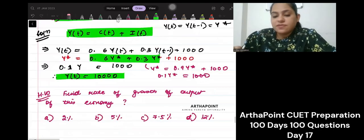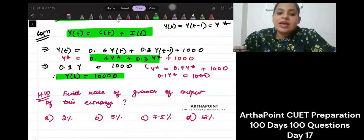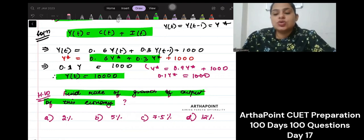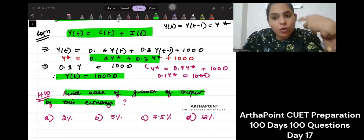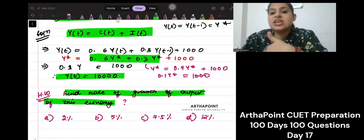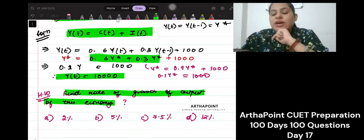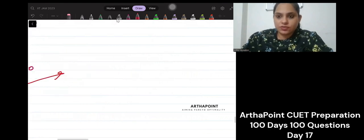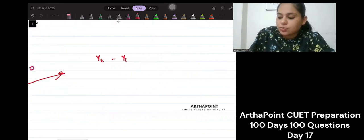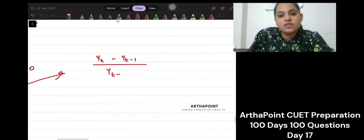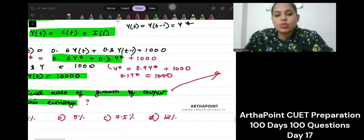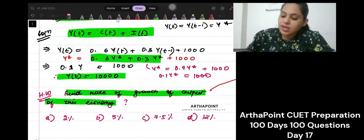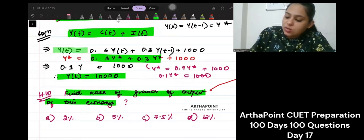Now, this is an important question and very difficult one. I want you to try this. Find the rate of growth of output of this economy. So now I'm asking that if I want to find the rate of growth of output, the rate of growth of output is change in output divided by the original value of output into 100. So if I don't make Y equal to Y minus 1 equal to Y star. And if I hold this equation constant.